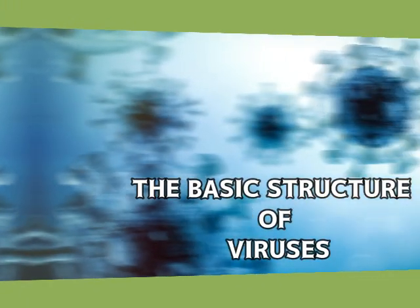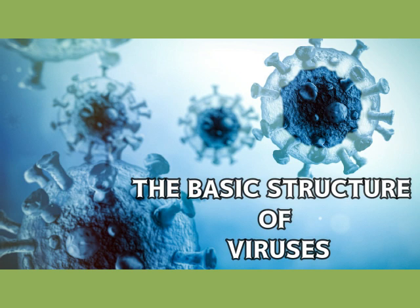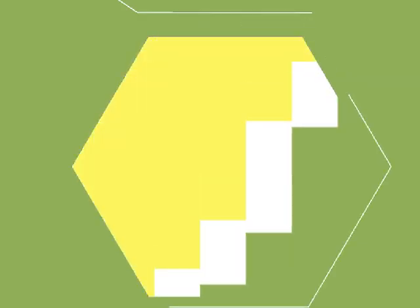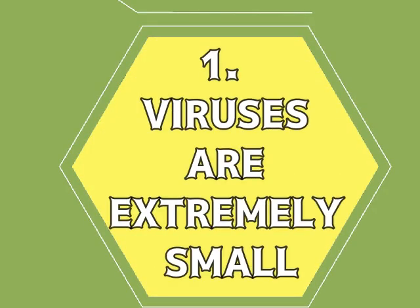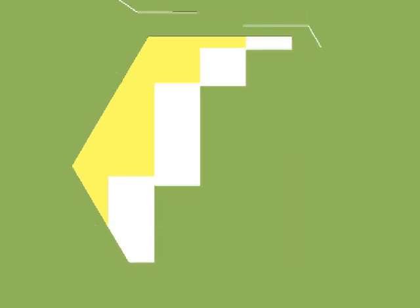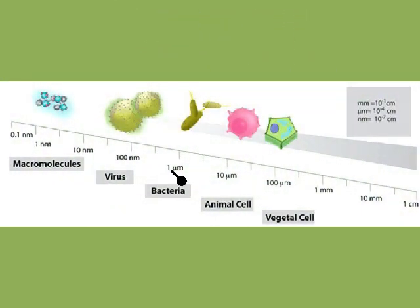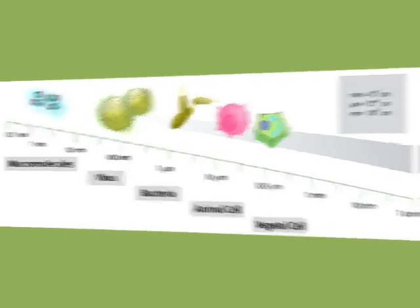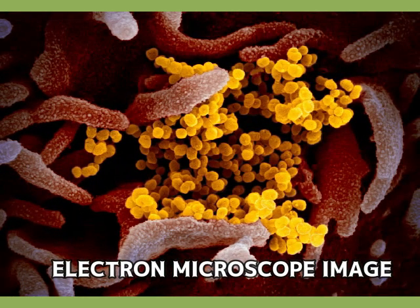Now let's take a look at the basic structure of viruses. Number one: viruses are extremely small — they are actually smaller than bacteria. Most viruses are so minute that they can only be seen under an electron microscope.